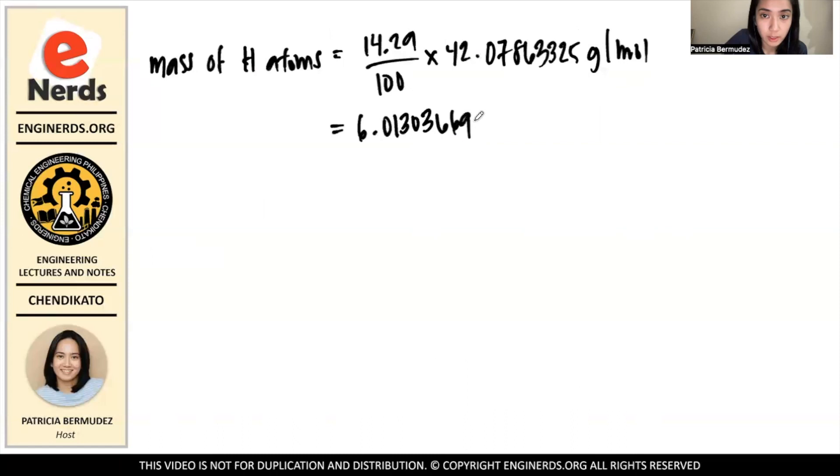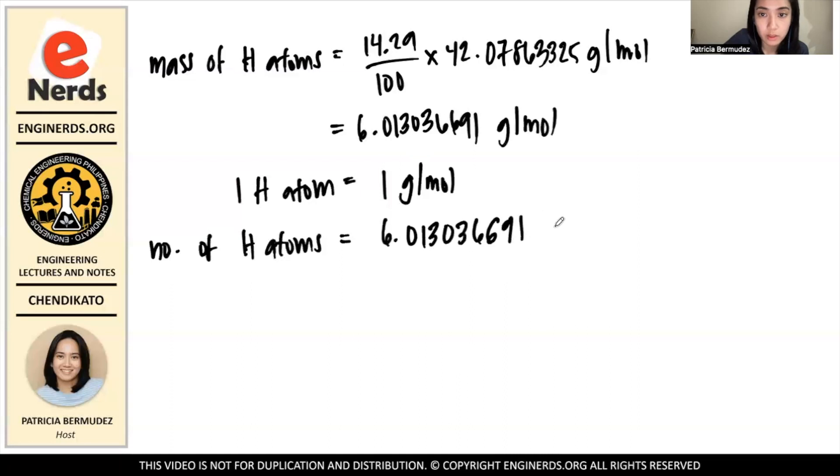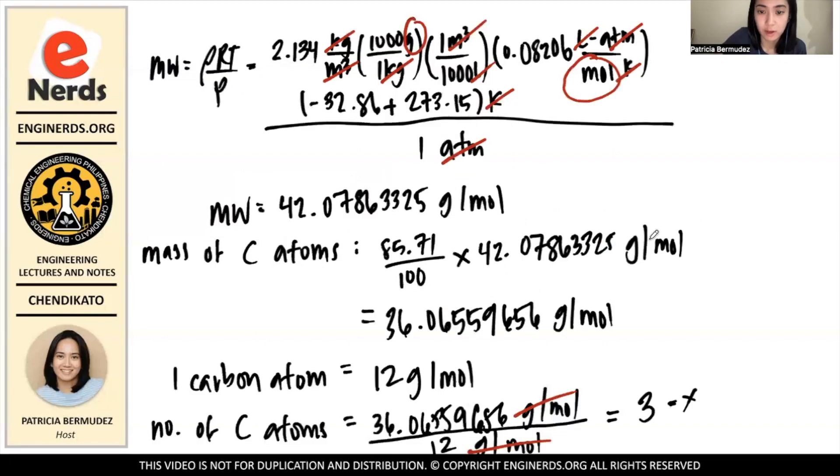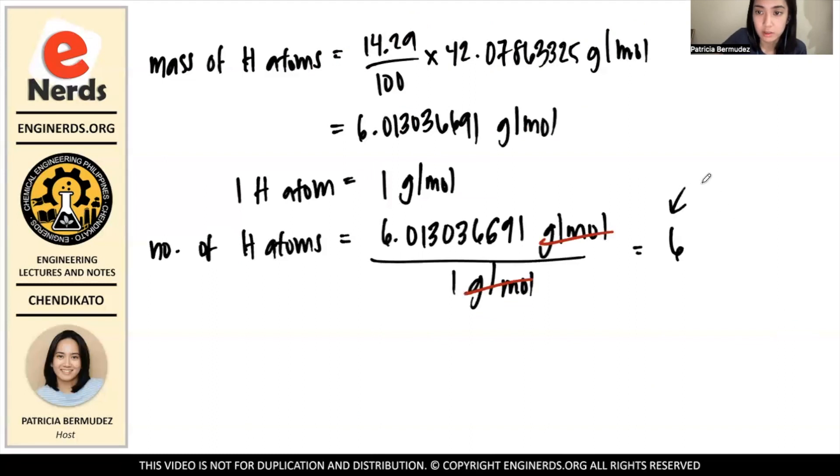And we know that one hydrogen atom has a molecular weight of 1 g/mol. So number of H atoms is 6.013036691 g/mol ÷ 1 g/mol. And you see the units cancel here. So the number of H atoms is 6, rounded off.